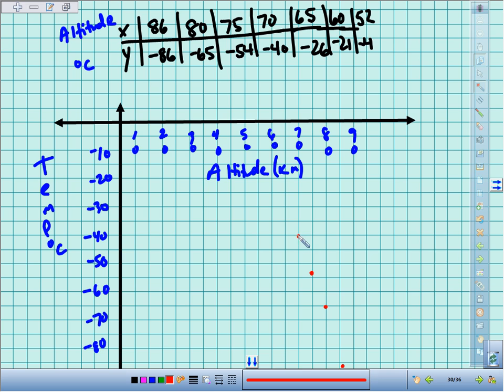70, negative 40: that's a nice easy spot to find. 65, negative 26: there's 20, 25, 26 is about there. 60, negative 21: over 60, down 21, right about there. And 52, negative 4: 52 is about there, negative 4 out there.